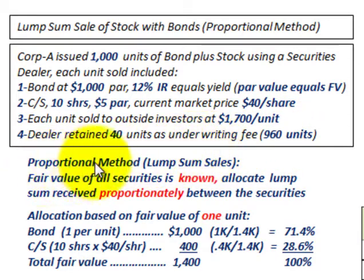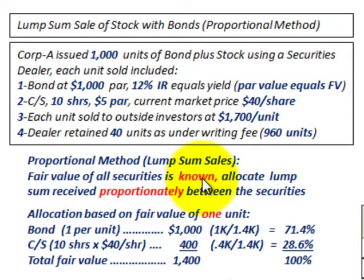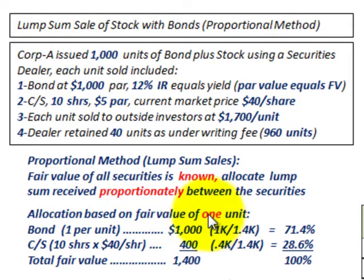We're going to use the proportional method for this lump sum sale allocation because the fair value of all the securities are known. When fair values are known, you use the proportional method — allocating the lump sum received proportionately between the securities. We'll look at how to make this allocation starting from one unit and carry it forth.